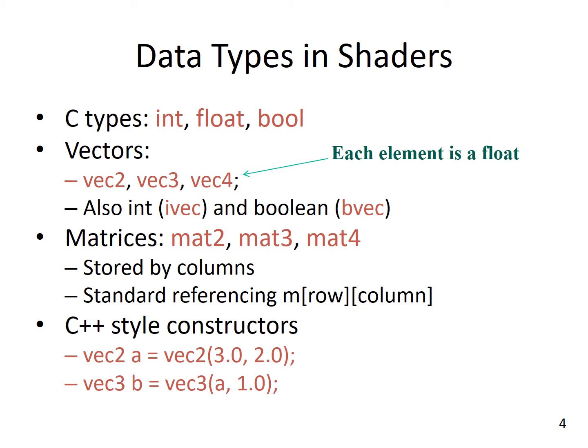Here are some data types in the shaders. They are C-like data types such as int, float, and boolean, and we have vectors as well in addition. Each element of these vectors is a float. We can have integer vectors, and they will start with an 'I', indicating that these are not floats, but integers, or booleans with a 'B'.